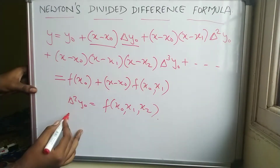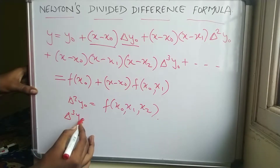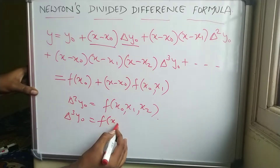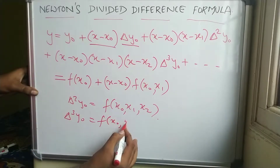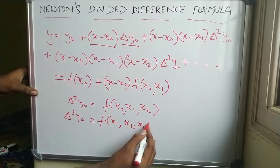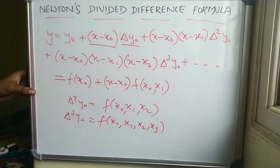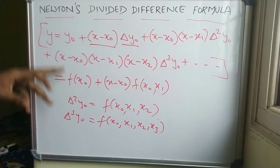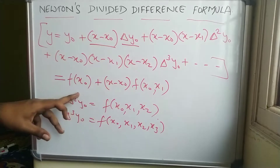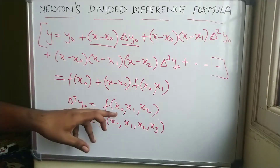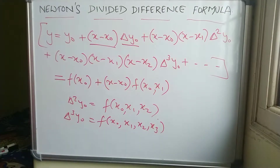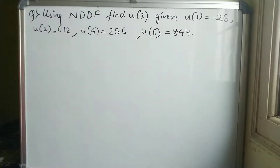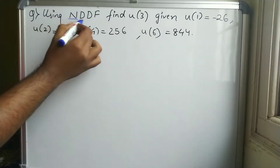Also, Δ³y₀ can be written as f(x₀, x₁, x₂, x₃). This is the basic formula, and in place of the delta notation we can write the equivalent function notation as well.